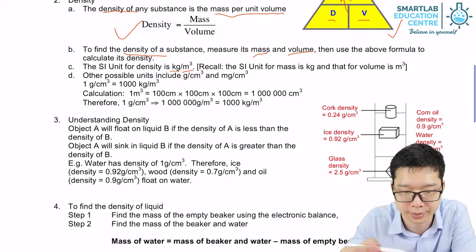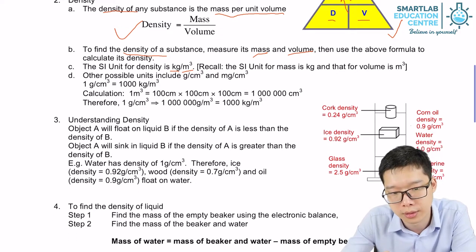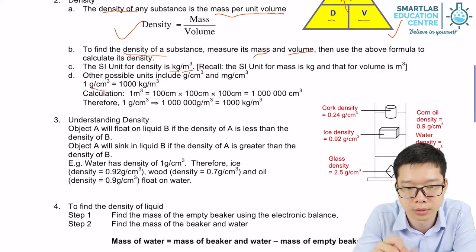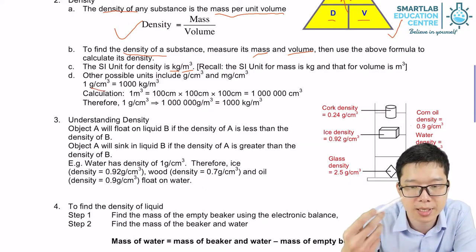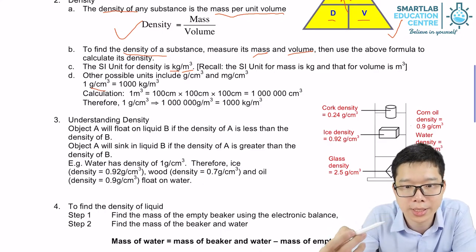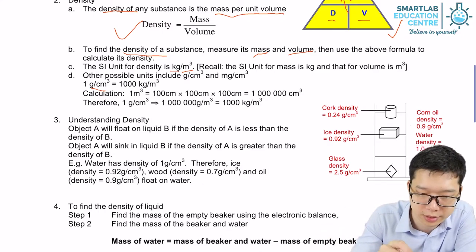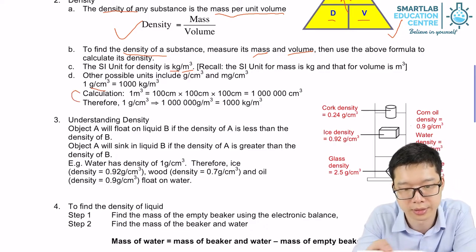And there are other commonly used units for density. For example, gram per cm cube. So 1 gram per cm cube equals to 1000 kg per meter cube. The calculation conversion is over here.